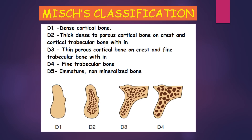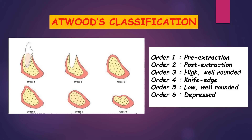Coming to Atwood's classification — the most important classification for residual ridge resorption — Atwood classified residual ridge resorption into 6 orders. Order 1 is pre-extraction. Order 2 is post-extraction. Order 3 is high, well-rounded. Order 4 is knife-edge. Order 5 is low, well-rounded. And Order 6 is depressed.